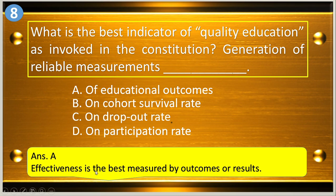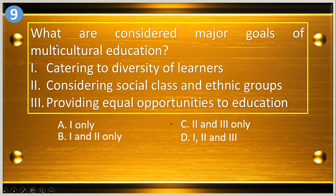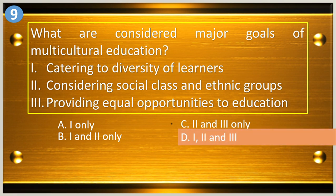The effectiveness of education is best measured by outcomes or results. Number nine: what are considered major goals of multicultural education? One, catering to diversity of learners; two, considering social class and ethnic groups; three, providing equal opportunities to education. The answer is letter D — one, two, and three.